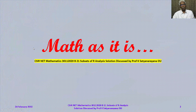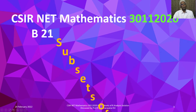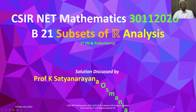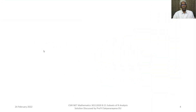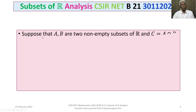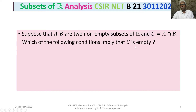We will now discuss the solution of a problem from the section Analysis on some properties of subsets of R. This problem appeared in the CSIR National Eligibility Test held on 30 November 2020, from section B. The problem is: suppose A and B are two non-empty subsets of R, the set of real numbers, and C equals A intersection B. Which of the following conditions imply that C is empty?